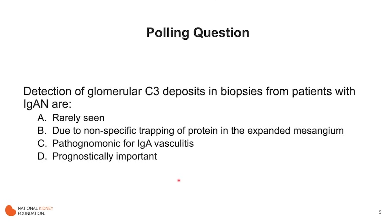I want to start with a polling question. When you detect glomerular C3 deposits in biopsies from patients with IgA nephropathy, what best describes them? Are they: A, rarely seen; B, due to nonspecific trapping of the protein C3 in the expanded mesangium; C, pathognomonic for IgA vasculitis; or D, prognostically important?